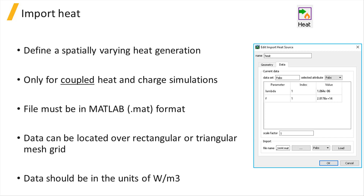Similarly, the Heat Import Source object allows the definition of a spatially varying heat generation profile within the simulation. This object can only be used in coupled heat and charge simulations to account for the effect of heat generation on material properties and device performance. The geometry settings and data format are the same as the temperature import source object, and the data should be in the units of watts per cubic meter.